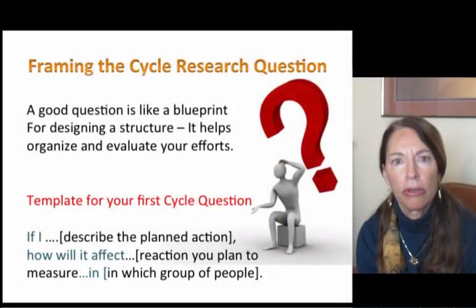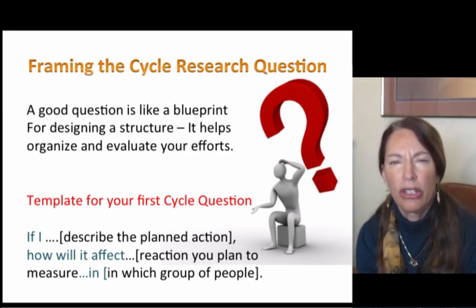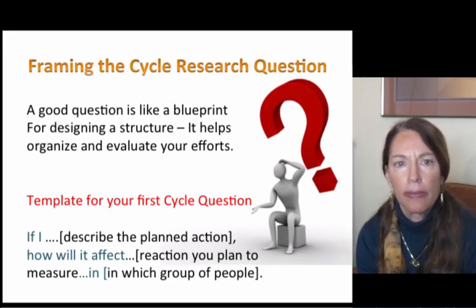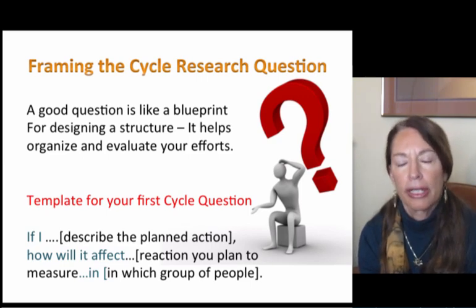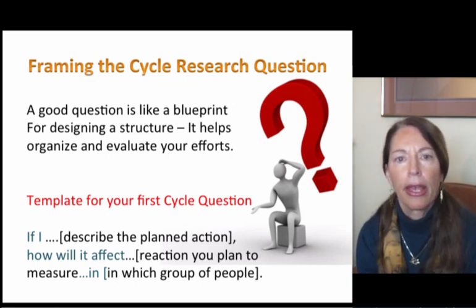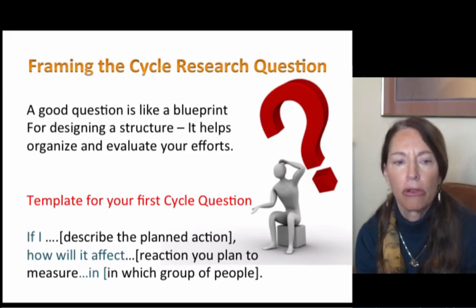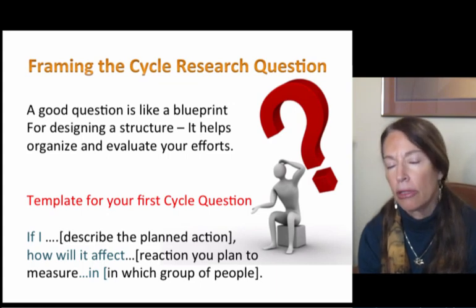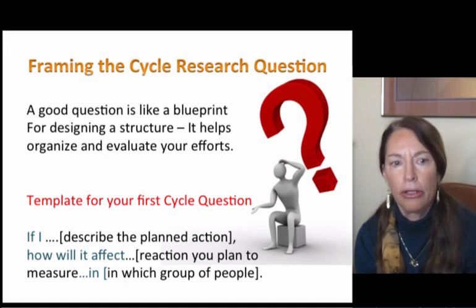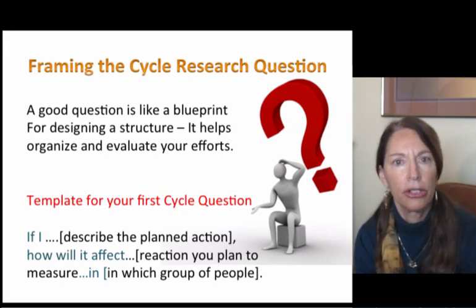Before you start your first cycle of action research you need to develop a cycle research question. These don't start with 'how can I,' which is the general question — they start with the answer to that question. So for example if you were teaching English literature and your question is how do I get students more engaged, your action research cycle question might be: if I have my students assume the characters in the novel and use some form of technology to record their behavior, how will it affect students' engagement or comprehension of the concepts in this exercise?